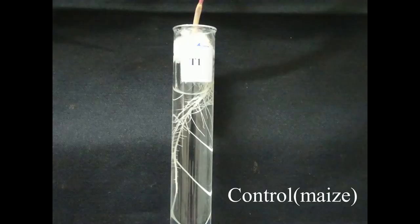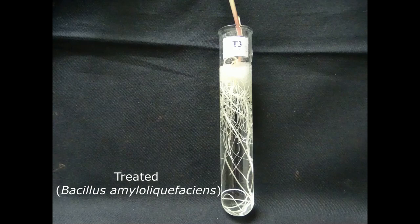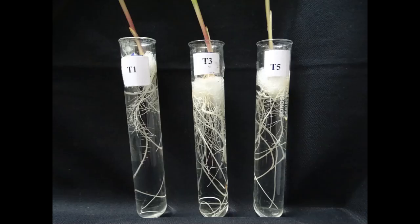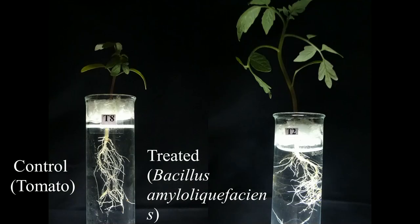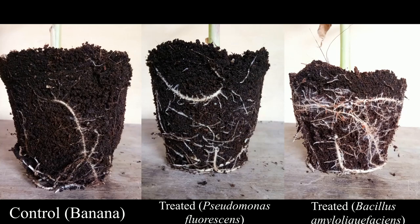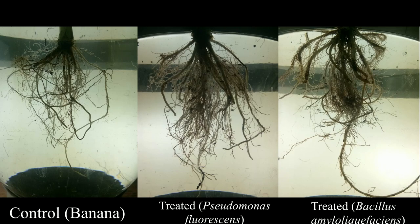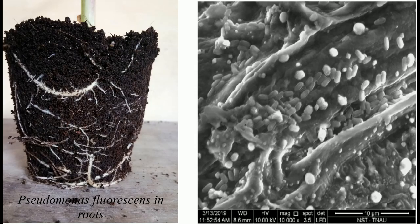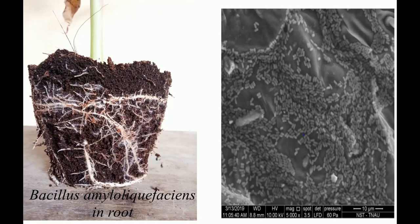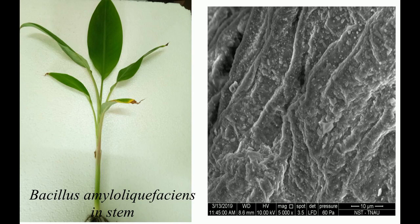Maize plant without treatment versus biocontrol agent treated plant: Bacillus amyloliquefaciens treated plant shows better root architecture and offshoot growth. Pseudomonas fluorescens colonization is visible in roots and stem. Similarly, Bacillus amyloliquefaciens colonization is shown in root and stem.